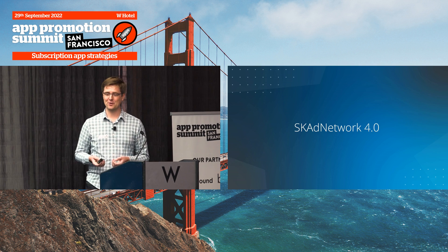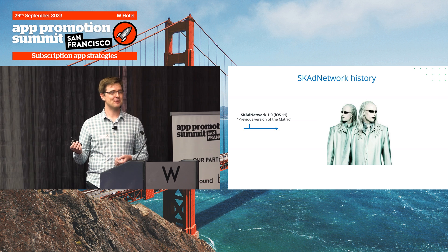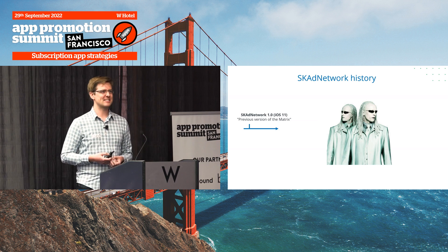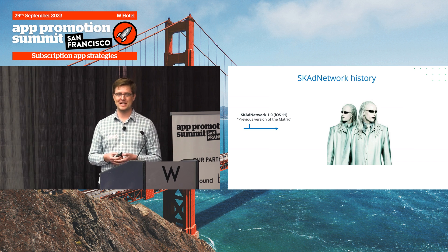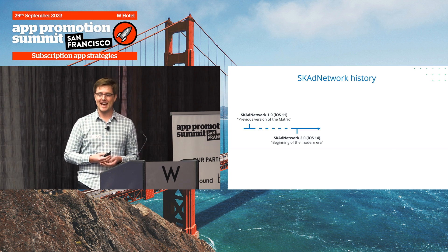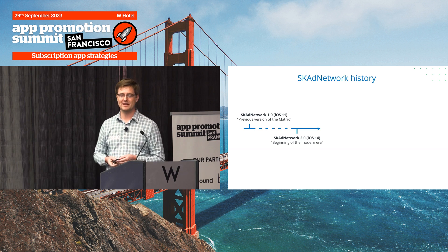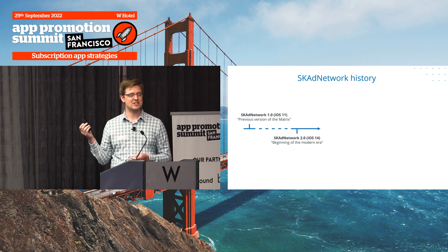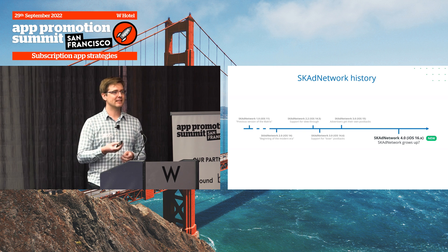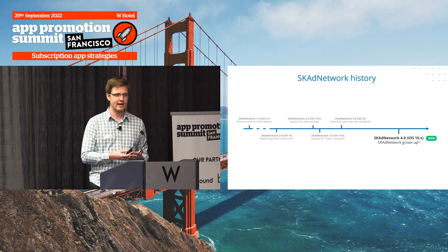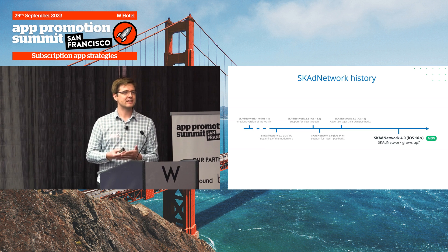SKAdNetwork 4.0. Let's start with the history of SKAN — just a brief recap. SKAN 1.0 is back in iOS 11, around 2017 — way back there in the beginning of history. But the first modern version of SKAdNetwork is 2.0, which came with the App Tracking Transparency policy and the IDFA changes in mid-2020. Apple has made incremental improvements since then, but they haven't addressed some of the really systemic issues that cause a lot of pain. And in 4.0, that's finally starting to change.